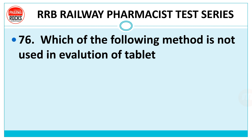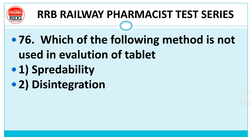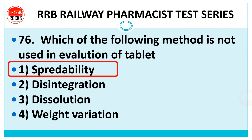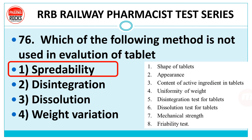Question 76: which of the following method is not used in evaluation of tablets — spreadability, disintegration, dissolution, or weight variation? The right answer is spreadability. Spreadability is generally used for semi-solid dosage forms, while tablet is a solid dosage form. Tablet evaluation parameters include shape, appearance, content of active ingredients, uniformity, disintegration, dissolution, mechanical strength, friability, and weight variation.